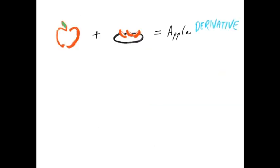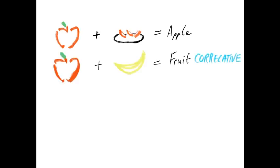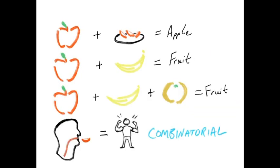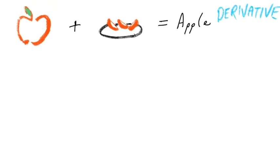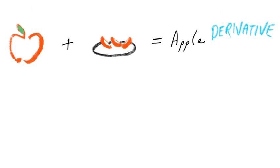There are four main processes for Meaningful Learning: derivative, correlative, superordinate, and combinatorial subsumption. For example, in derivative subsumption, existing knowledge plus new knowledge equals learning.